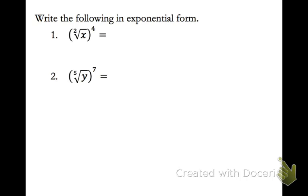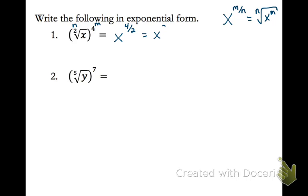Now we're going to start with some practice problems on rational exponents. The first thing we're going to do is write these in exponential form — that's the x to the m over n form. We're going to take it from radical form and put it in exponential form. Recall it was the nth root of x to the m. So for the first problem, n is going to be 2 and m is going to be 4. So this is x to the 4 over 2, because it's m over n. Simplify that fraction, we get x squared.